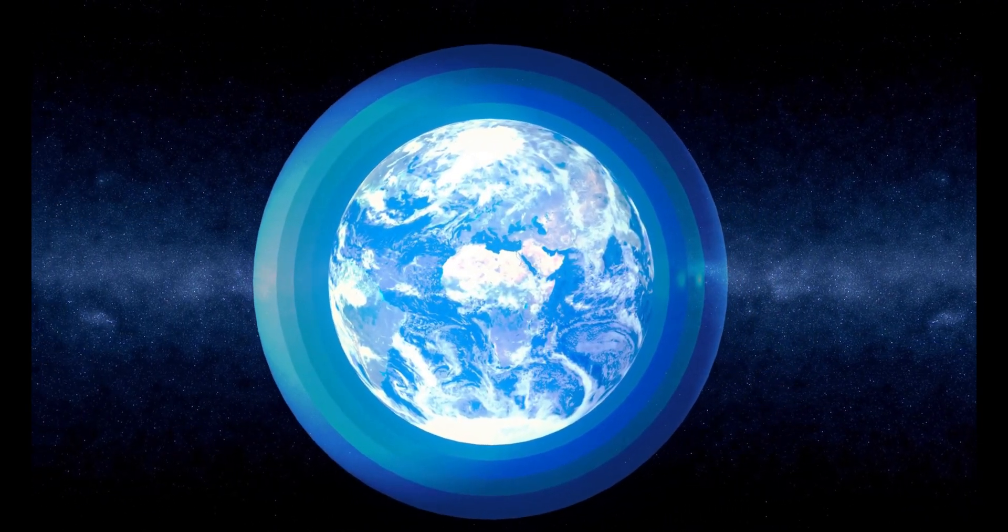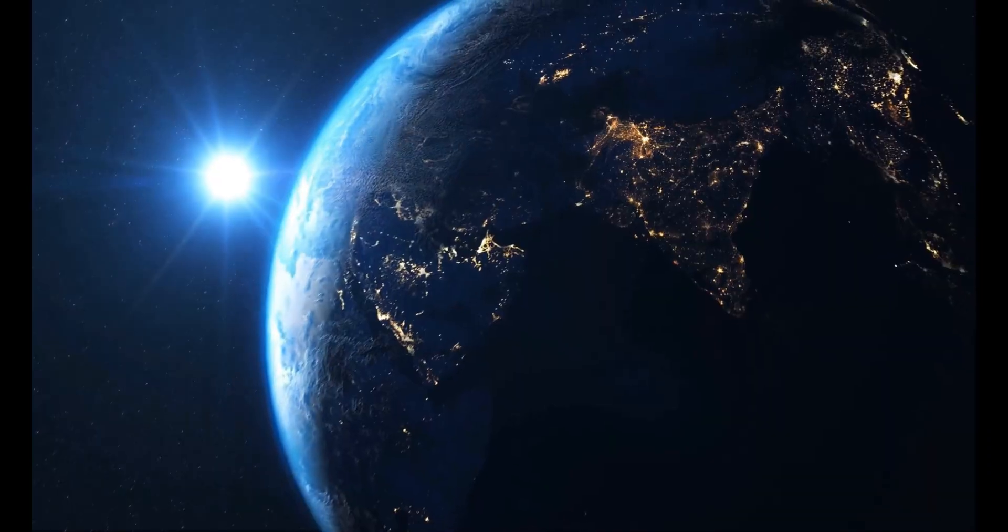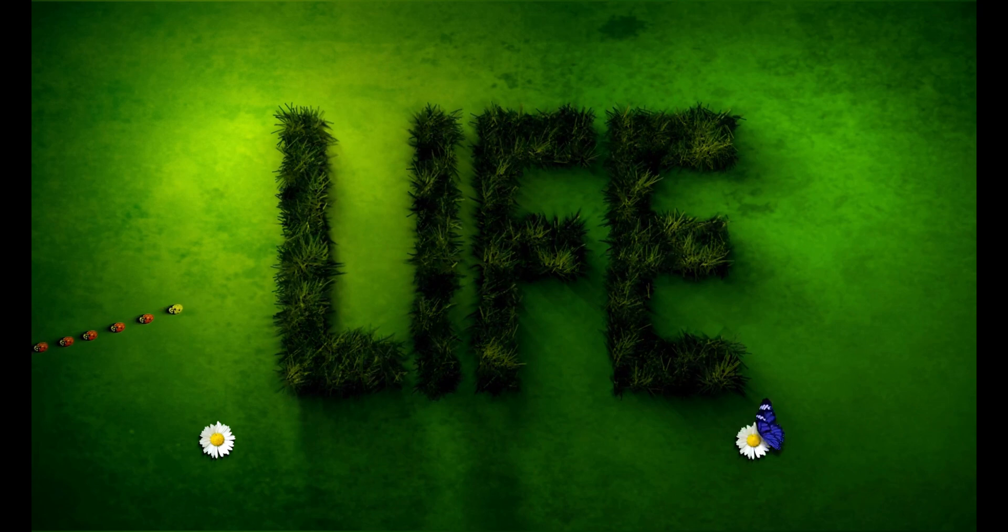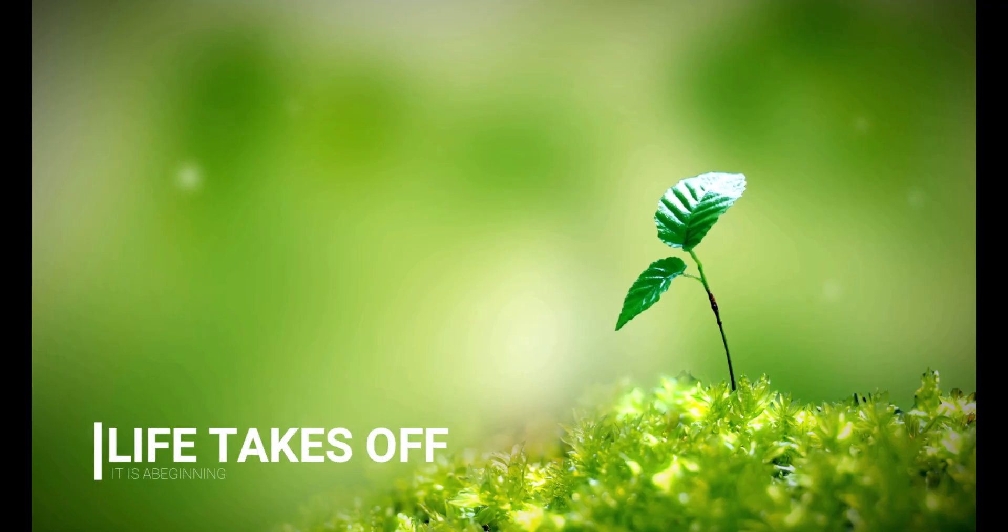Over years, ozone layers get thicker and thicker and prevent radiation from reaching Earth. Without this layer, life on Earth wouldn't exist. Shielded from radiation, life takes off.